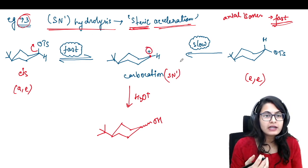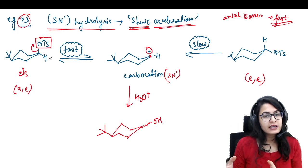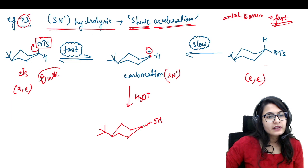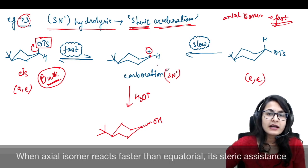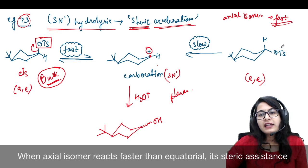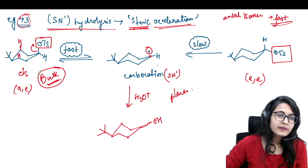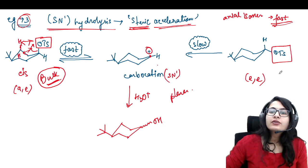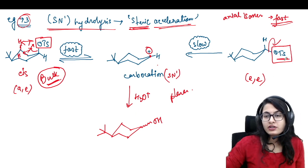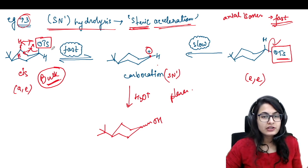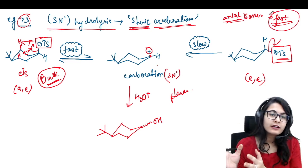What we have to think about is basically the carbocation formation — who is going to give a fast carbocation formation? The tosylate which is on the axial position is going to leave faster because it is bulky in nature. Because of its bulk, it is going to push itself off faster because it wants to be stable — the carbocation is planar. On the other hand, the equatorial tosylate doesn't have a problem; it doesn't have any 1,3-diaxial interactions like the cis isomer has. So why would it want to push away? The reaction of eliminating the tosylate is going to be slow when it is on the equatorial position and fast when it is on the axial position.